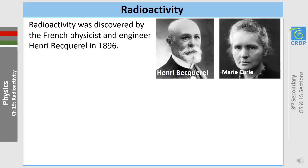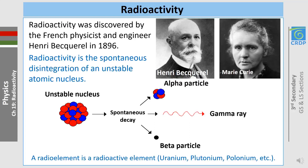Radioactivity was discovered independently by Henri Becquerel and Marie Curie in 1896. It is defined as the spontaneous disintegration of an unstable atomic nucleus, or a radio element such as uranium, plutonium, or polonium. An unstable element decays emitting particles such as alpha, or radiation such as gamma.